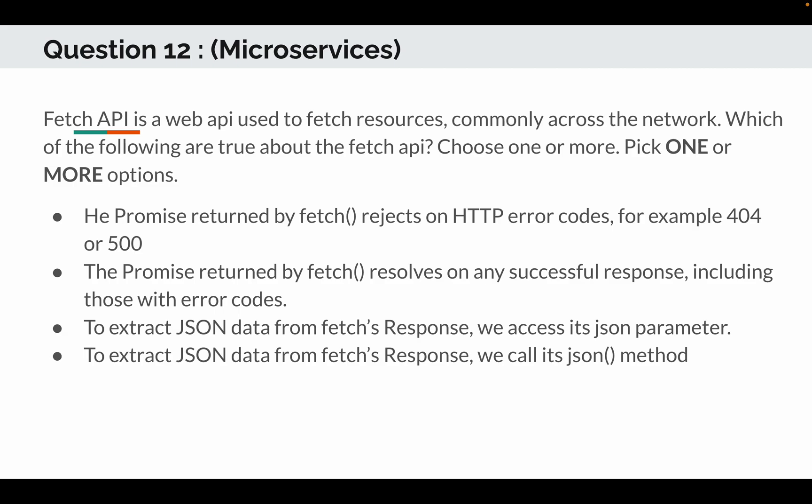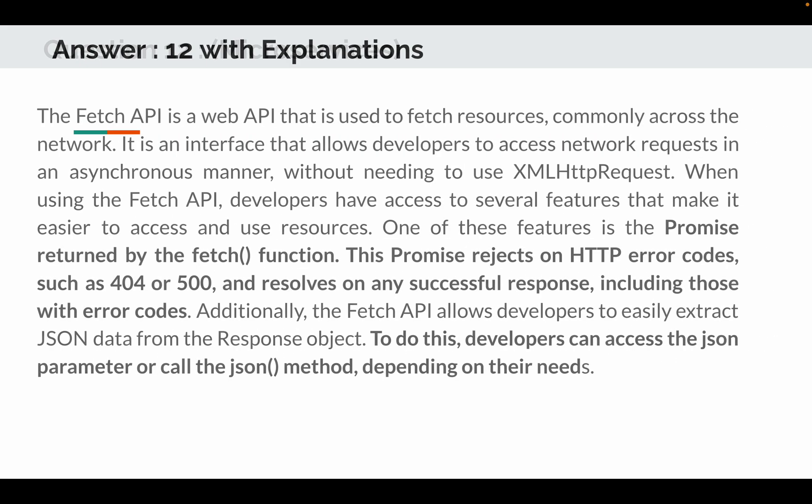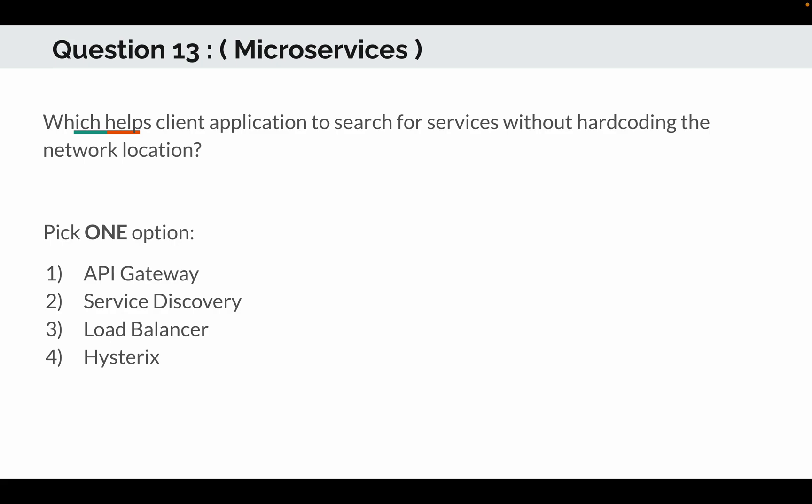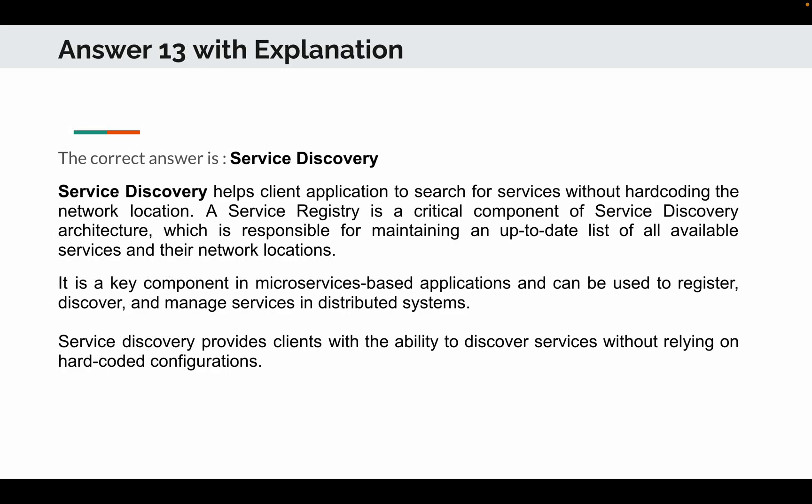Question number 13 was another microservices question: which component helps client applications search for services without hard-coding network locations? Options were API gateway, service discovery, and load balancer. The correct answer is service discovery. A service registry is a critical component of service discovery architecture, maintaining an up-to-date list of all available services and their network locations. It is used to register, discover, and manage services in distributed systems without relying on hard-coded configurations.